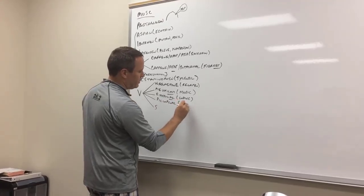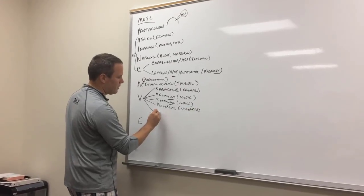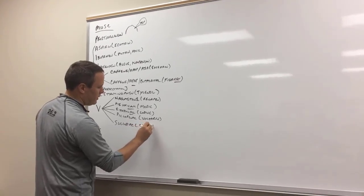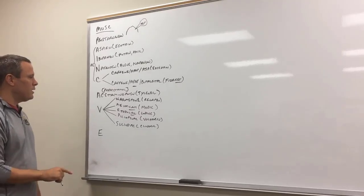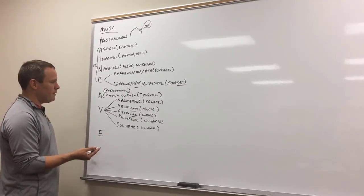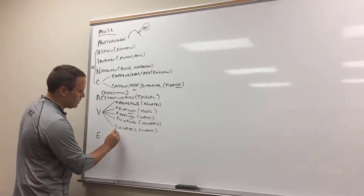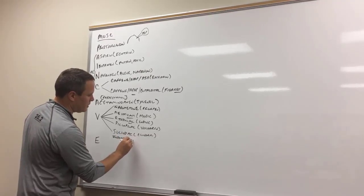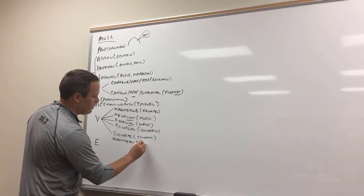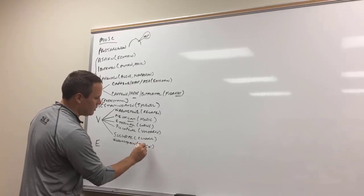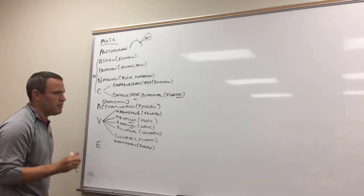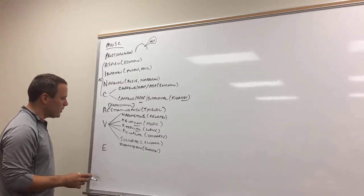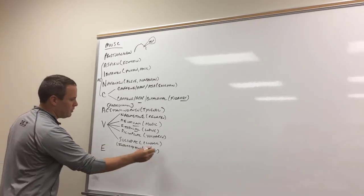Then you've got diclofenac, which is Voltaren. Sulindac, which is Clinoril. And there's another one that's important, indomethacin, brand name Indocin, which has important uses because of its long half-life. It's also used for patent ductus arteriosus, which is when you've got that hole in the artery with a newborn kiddo.